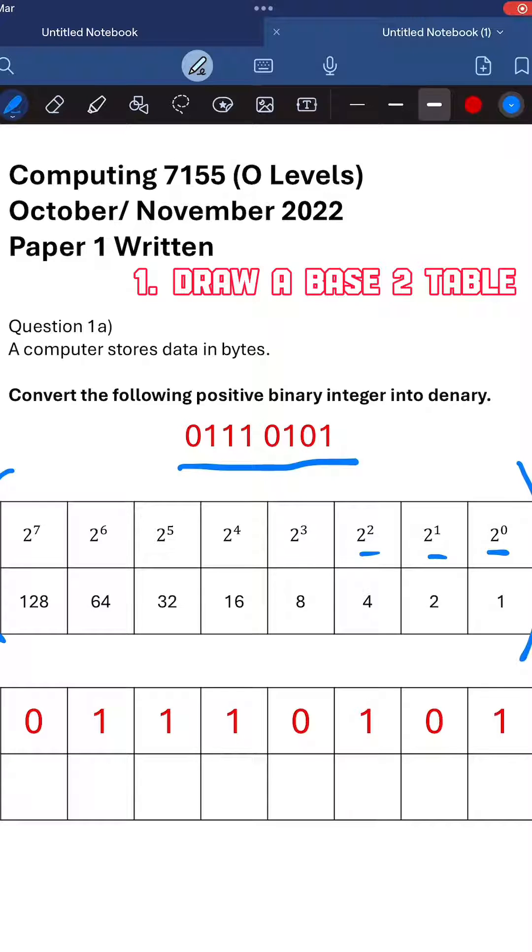So you draw 2 to the power of 0, 2 to the power of 1, 2 to the power of 2, 2 to the power of 3, 2 to the power of 4, 5, 6, 7, and then you calculate the binary equivalent.